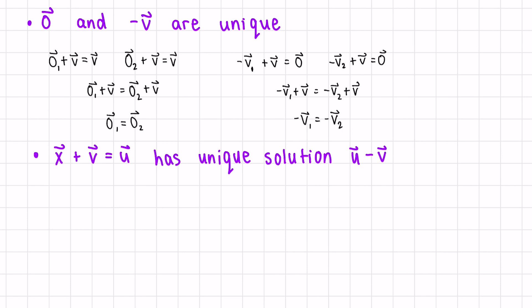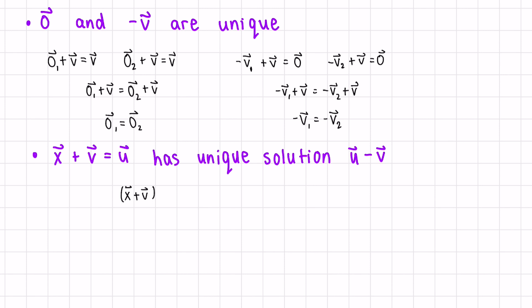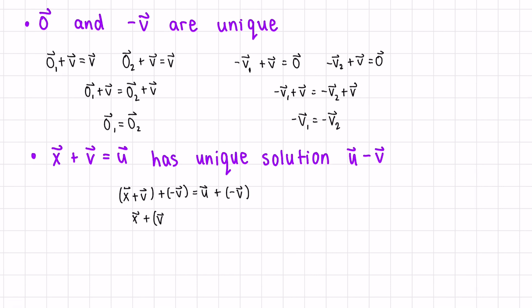The next property is that x plus v equals u has a unique solution for x: u minus v. We have x plus v on one side and u on the other. We add negative v to both sides, and because of associativity we rewrite the brackets. We get v plus negative v, which is zero, so x plus the zero vector equals u minus v. Adding the zero vector does nothing, so x equals u minus v.